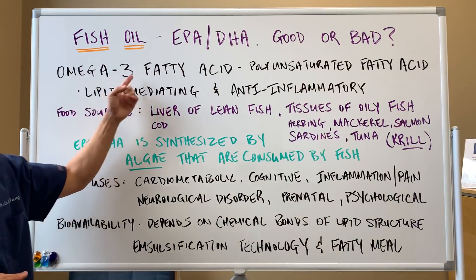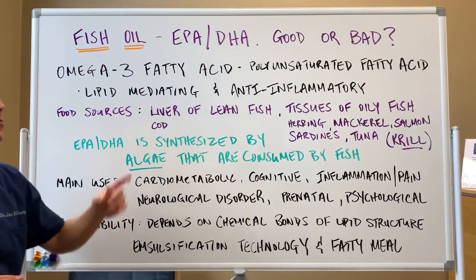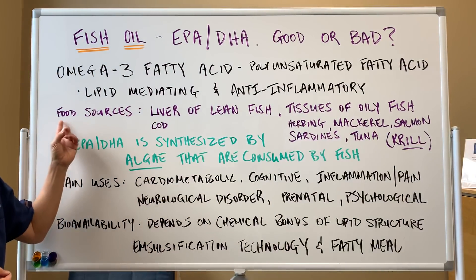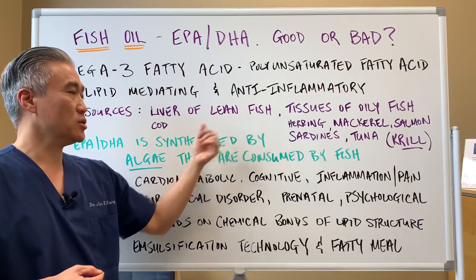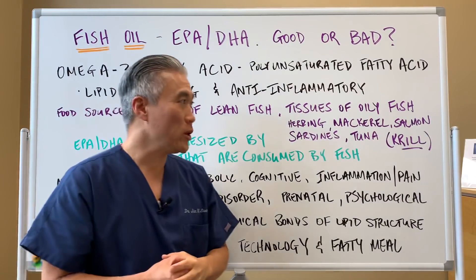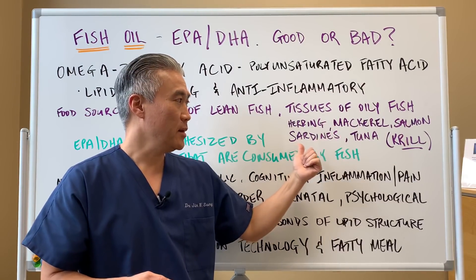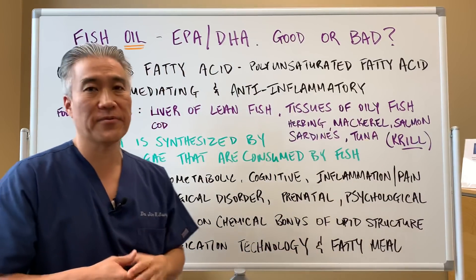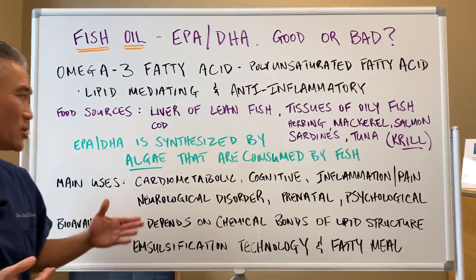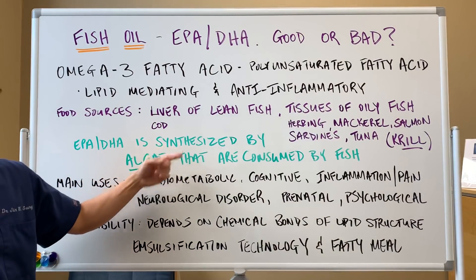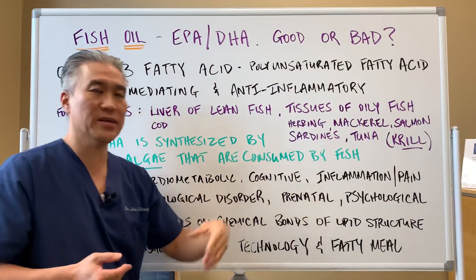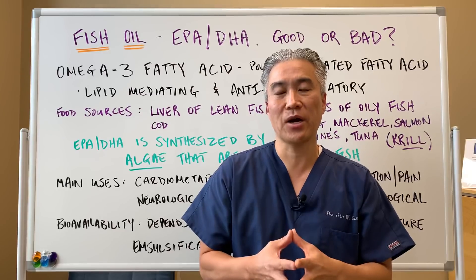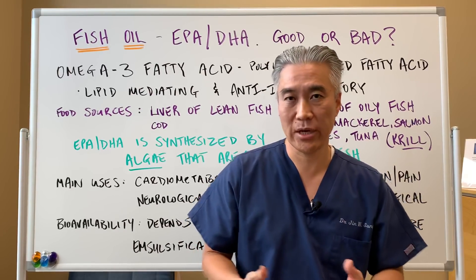When we think about fish oil, it's omega-3 fatty acids — a polyunsaturated fatty acid that's important for lipid mediating as well as an anti-inflammatory. Food sources include the liver of lean fish, particularly cod, or the tissues of oily fish like herring, mackerel, salmon, sardines, and tuna. More recently there's krill oil, and you can also get it from algae. EPA and DHA are synthesized by algae that are consumed by the fish — fish don't naturally come with fish oil. They eat algae, and the algae is what produces the EPA, DHA, or the omega-3s.